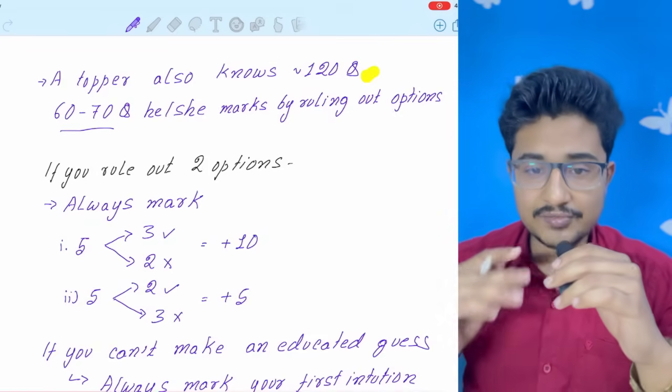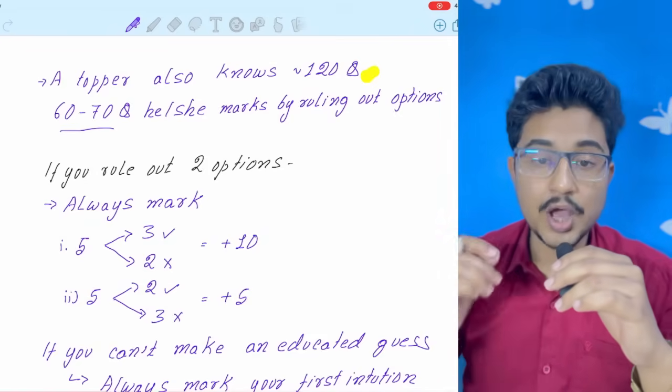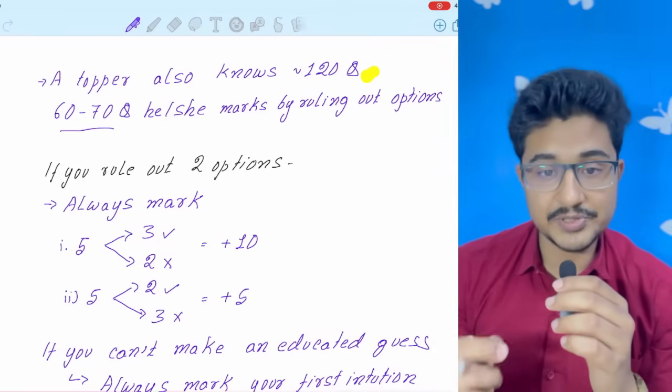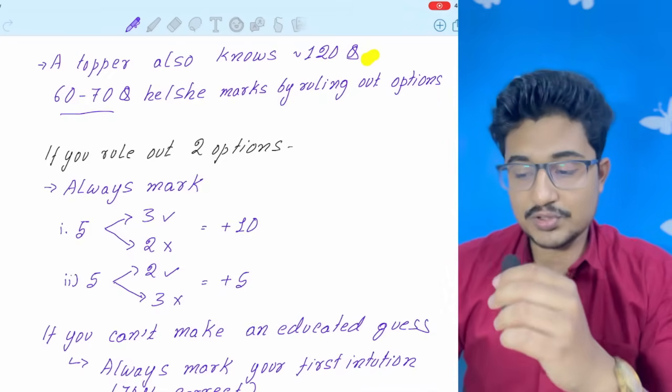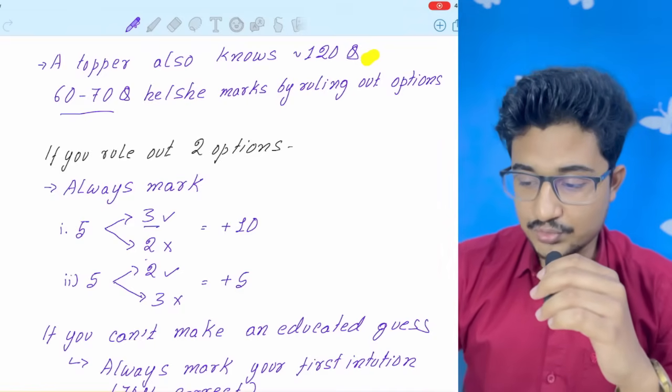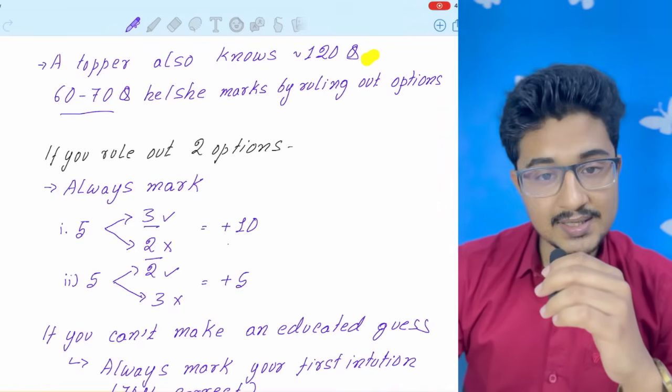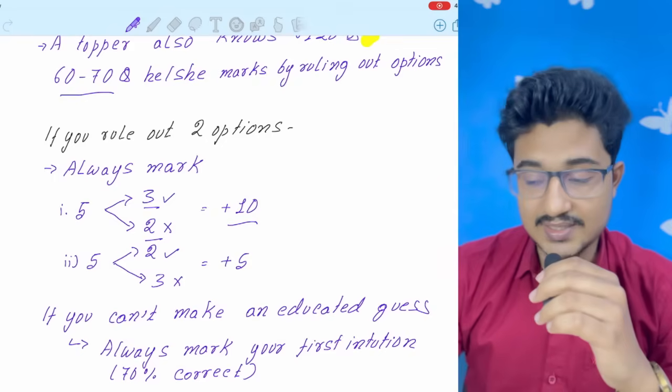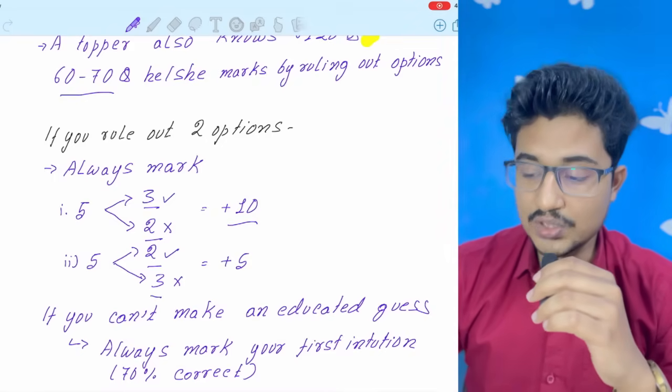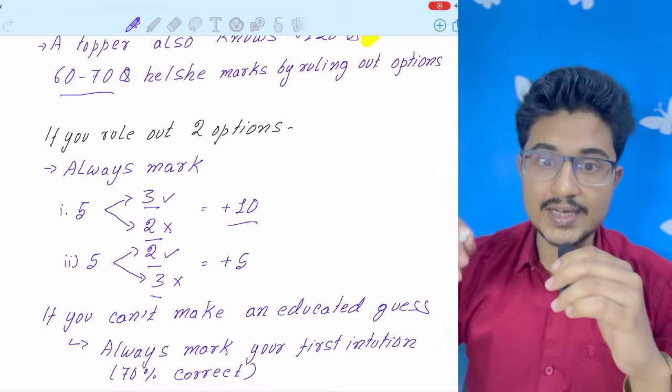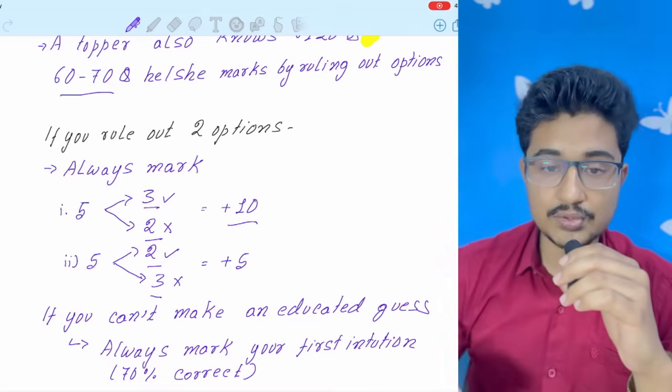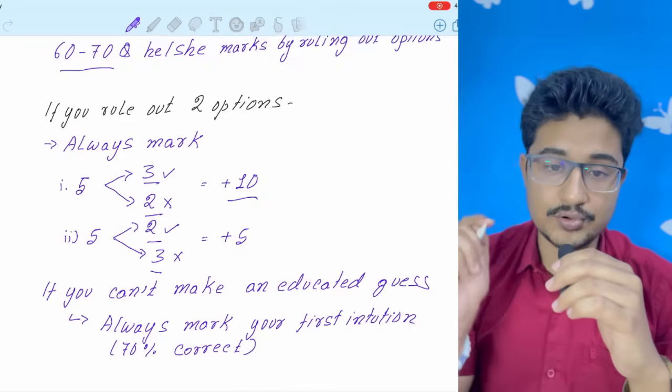Let me show you with an example. See, you are marking five questions where you have ruled out two options, but you don't have a clue regarding those two options which you haven't ruled out. So, approximately if you have five questions, then in a good possible scenario, you get three correct and two wrongs. Then you get a plus 10 marks. In the worst possible scenario, you get two correct and three wrongs. Still, you get plus five.